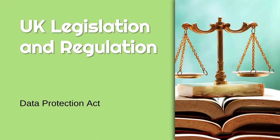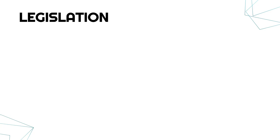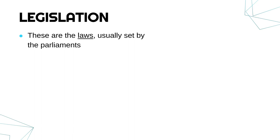We're going to be talking about a really important piece of legislation in the UK called the Data Protection Act. Before we talk about that specifically, let's be really clear about what legislation is, because that's not a word which is used all the time. A word which is used all the time is 'law', and effectively legislation is just another word for a law. These are usually set by parliaments — politicians pass Acts of Parliament and they become laws.